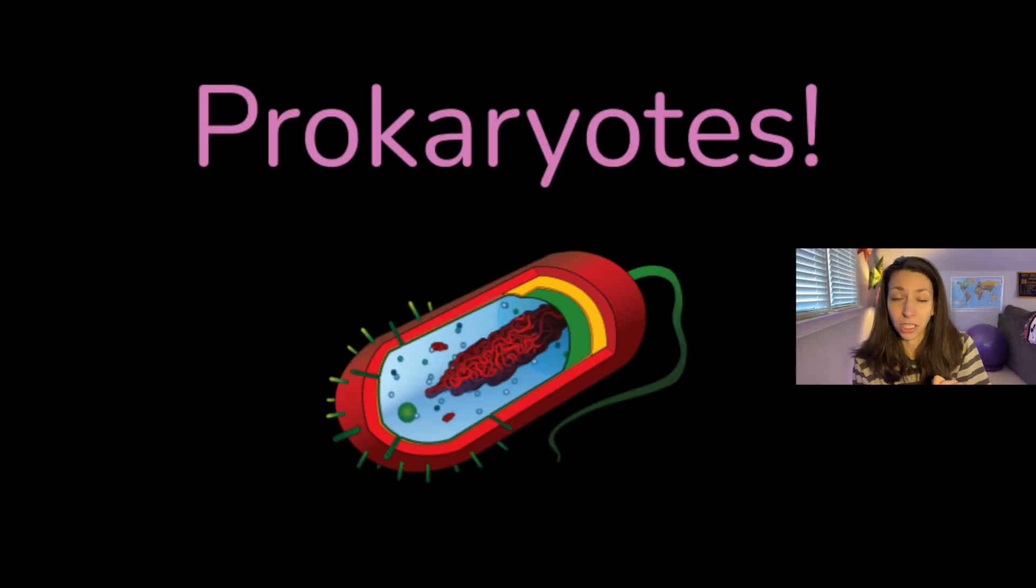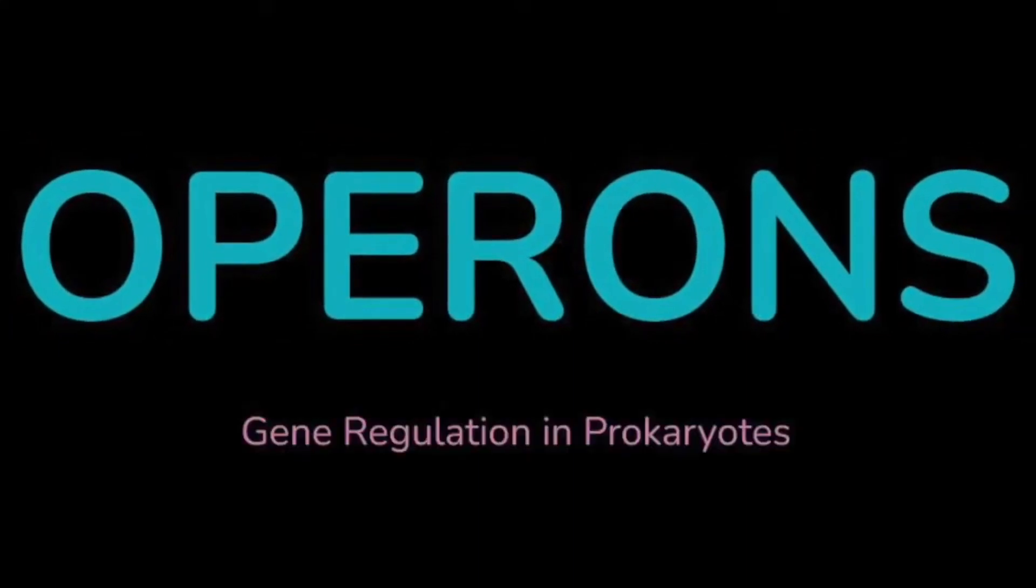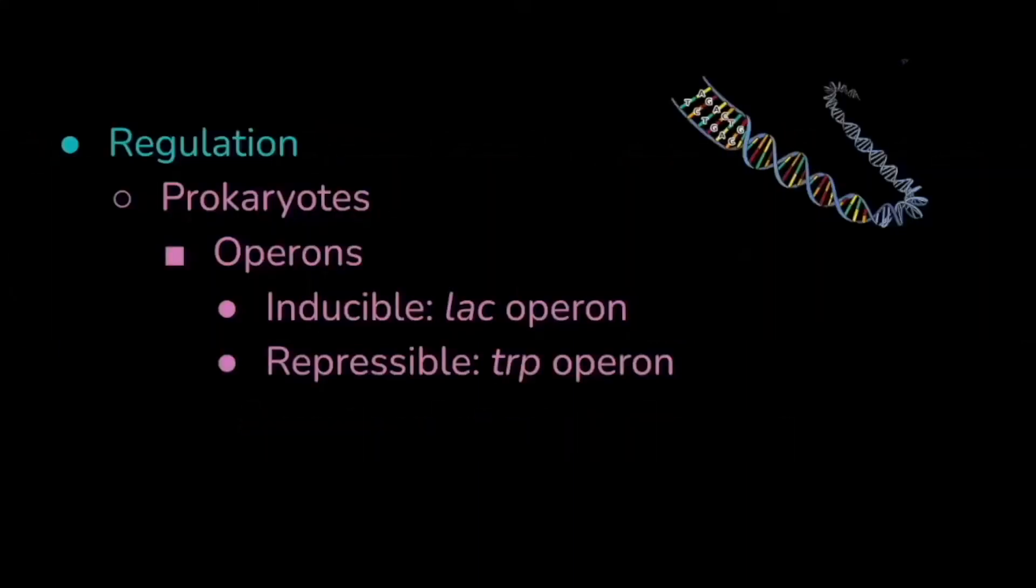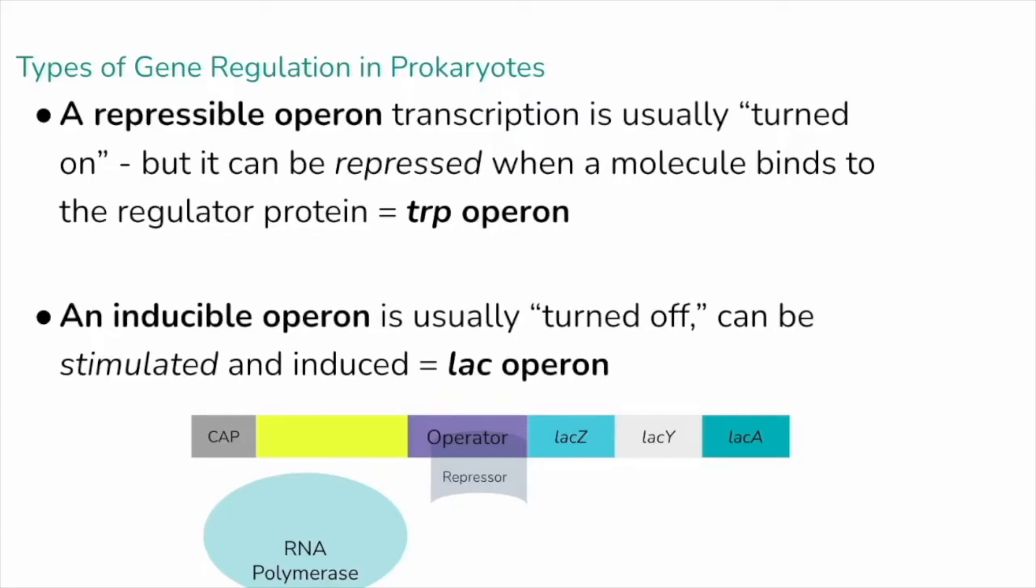So let's take a look at prokaryotic organisms first. There's two main types of operons that we're going to talk about today: inducible, like the lac operon, and repressible, like the trp operon. Inducible operons are basically ones that you can turn on and repressible operons are groups of genes that you can turn off. When we say turned on and off, what we mean is transcription or the action of RNA polymerase transcribing genes or sections of DNA into mRNA that will later be translated into proteins.